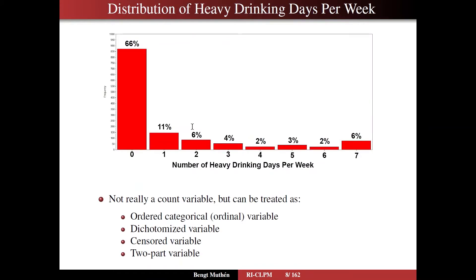On slide eight, we see the heavy drinking variable: number of heavy drinking days per week, ranging from zero to seven — eight categories total. You should not treat it as a count variable because the number of counts is not unlimited. It is more appropriate to treat it as an ordered categorical ordinal variable. You could dichotomize it, but that would lose information in the tail. It could also be treated as a continuous censored variable — censored at zero — or as a two-part model, a topic we will discuss later.